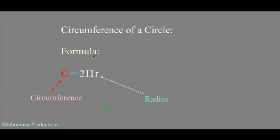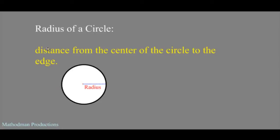The formula for the circumference of a circle is C for circumference equals 2 pi r, where pi is just a constant and r is the radius. Just a little review. Radius is the distance from the center of a circle to the edge.